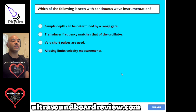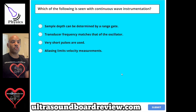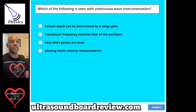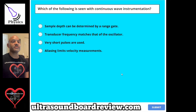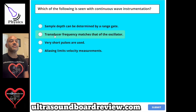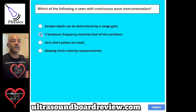Question 113. Which of the following is seen with continuous wave instrumentation? A, sample depth can be determined by a range gate. B, transducer frequency matches that of the oscillator. C, very short pulses are used. Or D, aliasing limits velocity measurements. The answer is B, transducer frequency matches that of the oscillator.